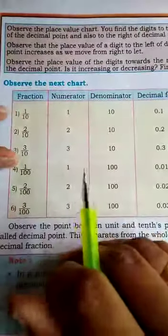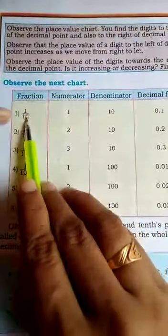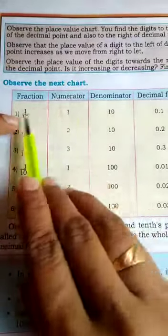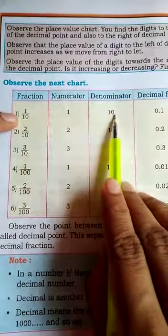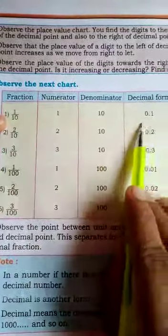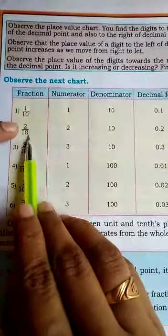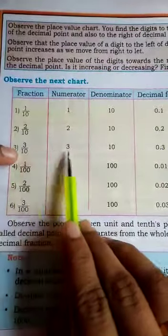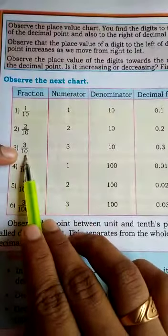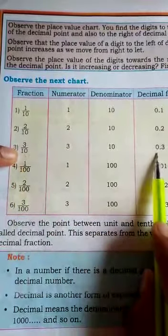Now observe the next chart. Fraction is 1 by 10, its numerator is 1, denominator 10 and decimal form 0.1. Similarly 2 by 10, 3 by 10, numerator 3, denominator 10, decimal form 0.3.